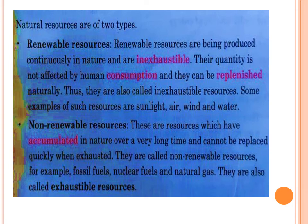Non-renewable resources are resources which have accumulated in nature over a very long time and cannot be replaced quickly when exhausted. It takes millions of years to produce these resources, so they cannot be produced in a very short period of time, and if we are overusing them, they can be exhausted fully. Non-renewable resources include fossil fuels, nuclear fuels, and natural gas. They are also called exhaustible resources because they can be finished if we are overusing them.